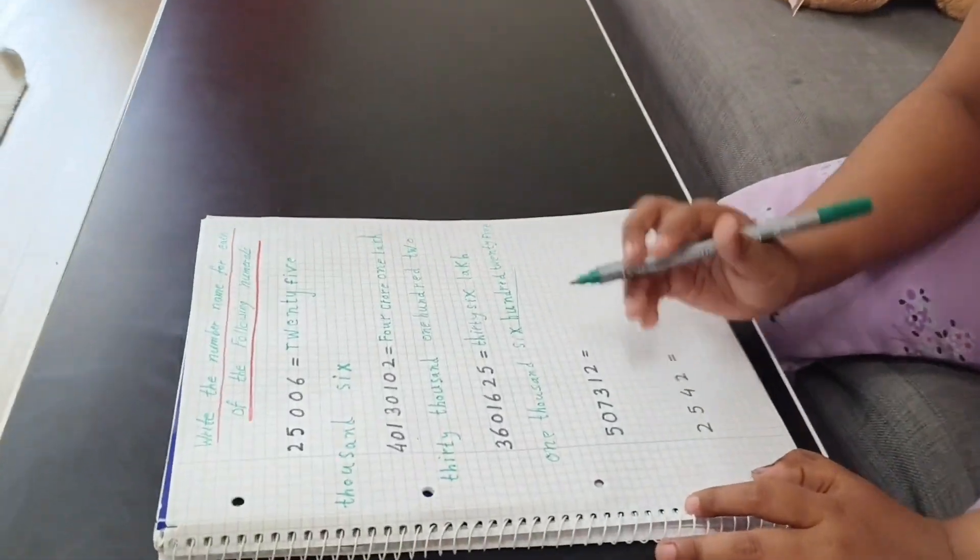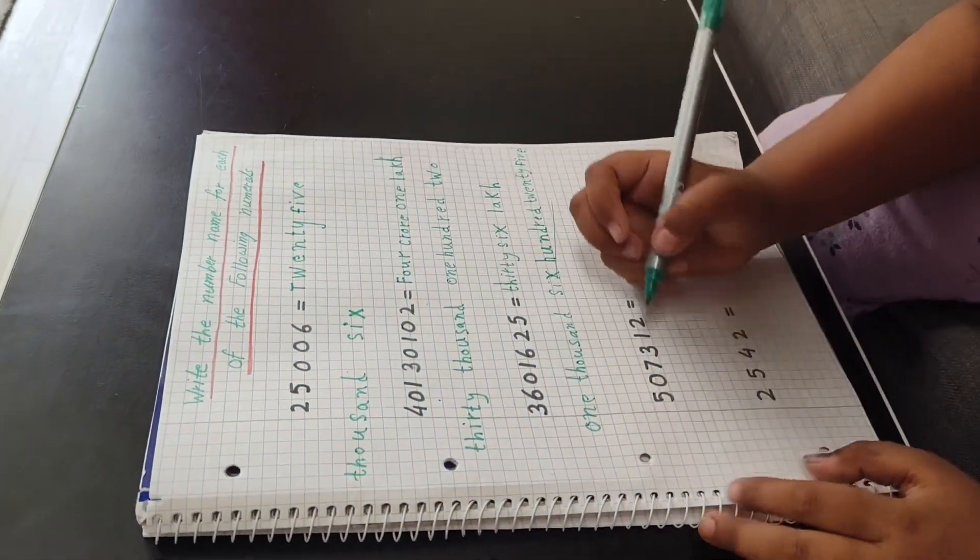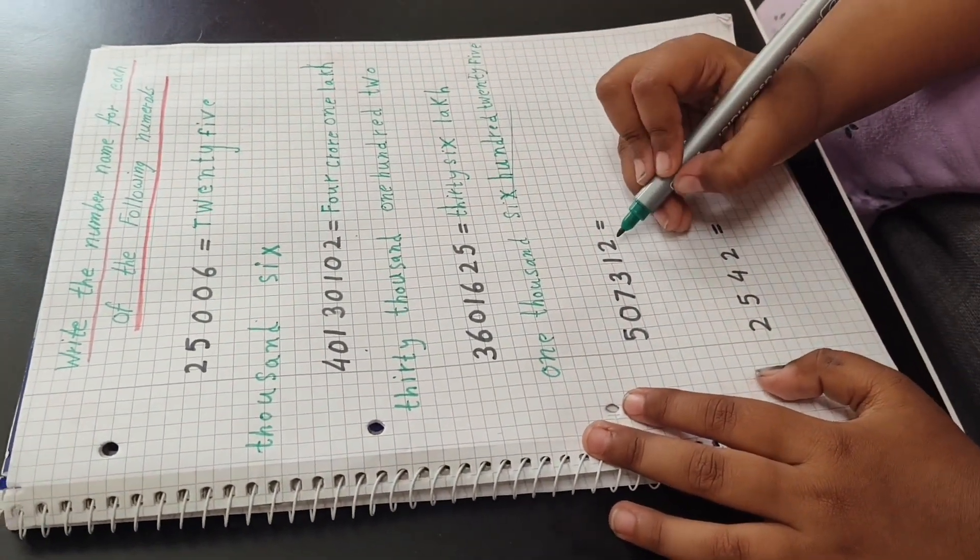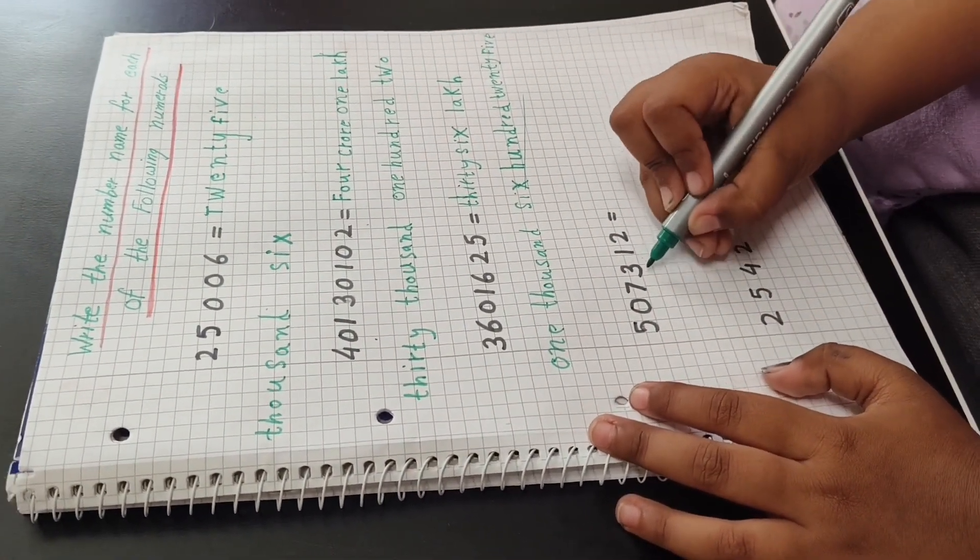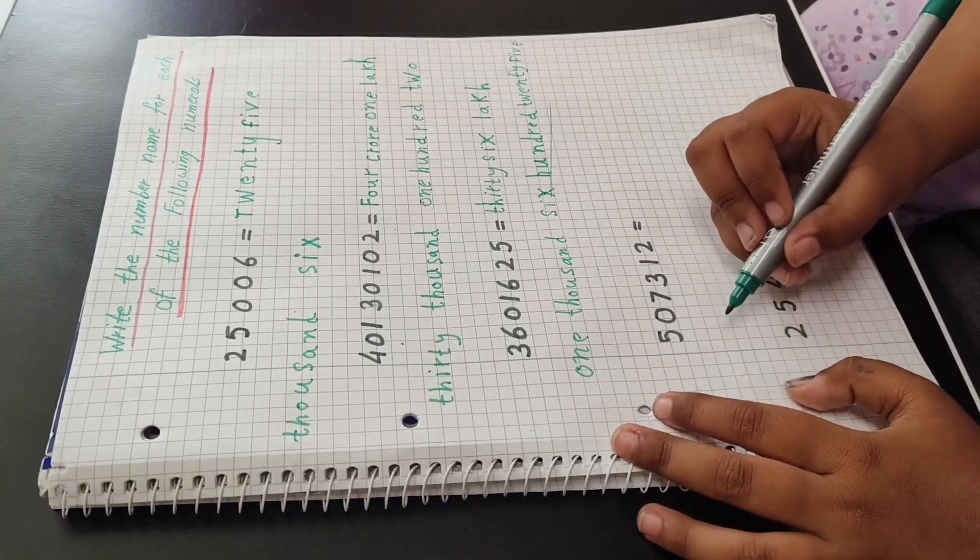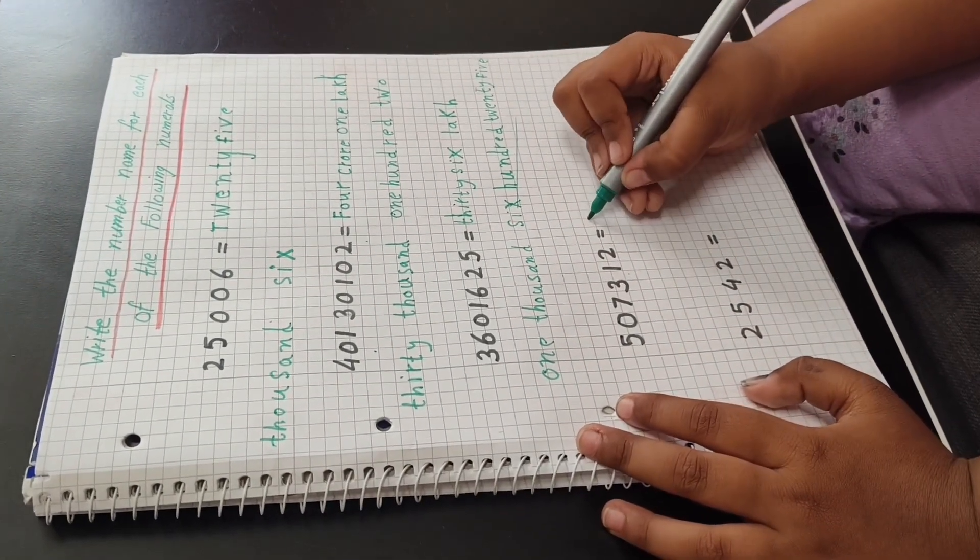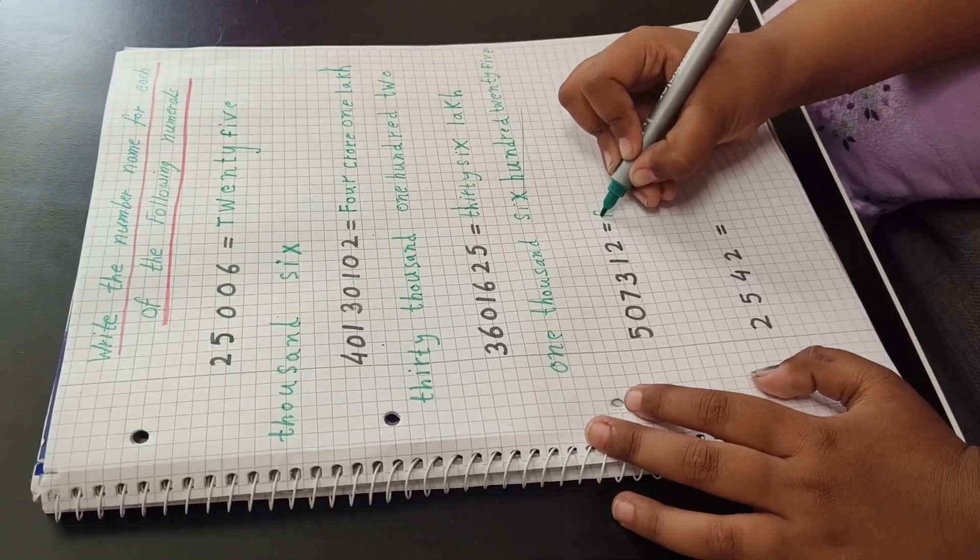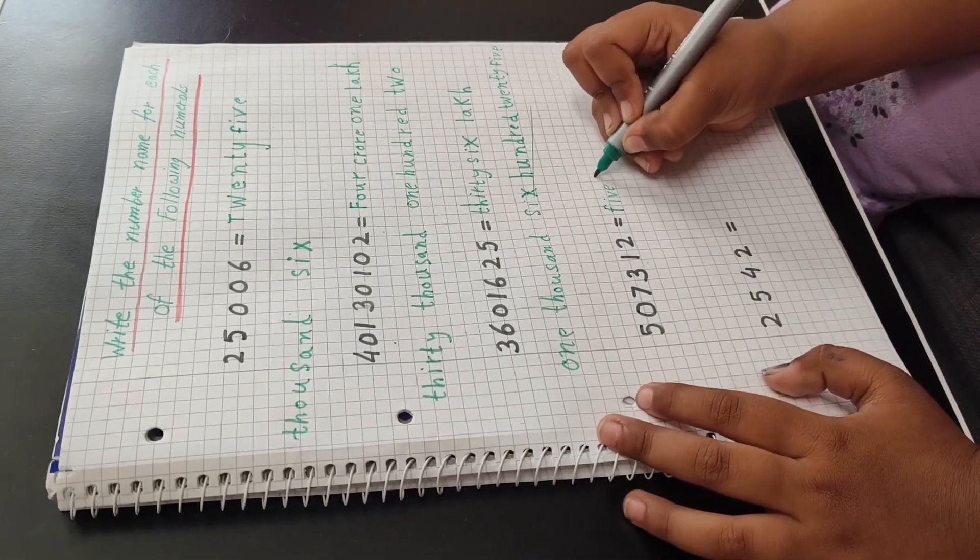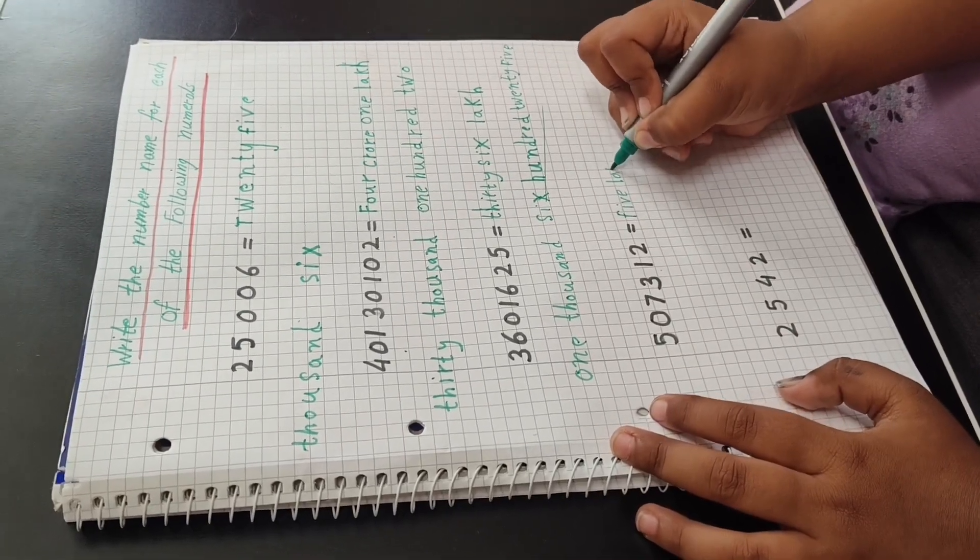This is done. Now I will count: ones, tens, hundreds, thousands, ten thousands, lakhs. So five lakh, okay. F-I-V-E, five lakh, L-A-K-H.